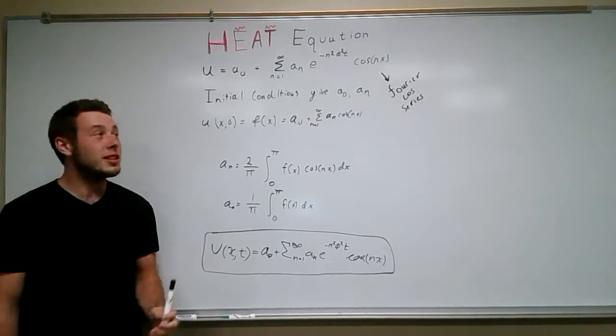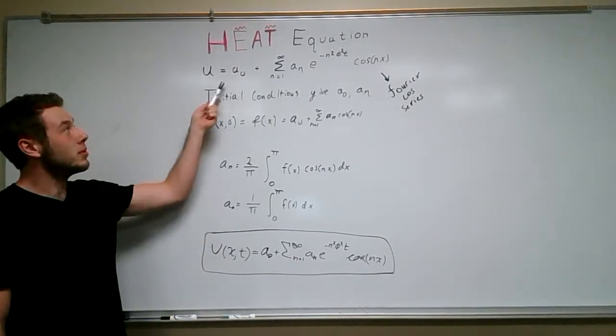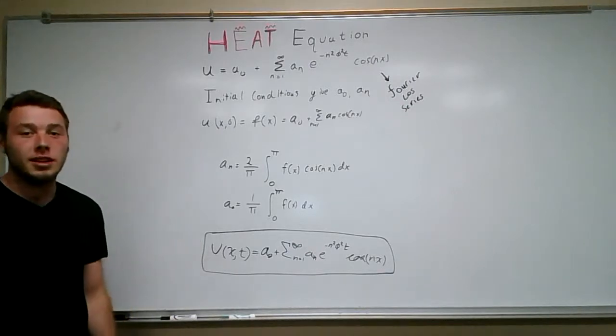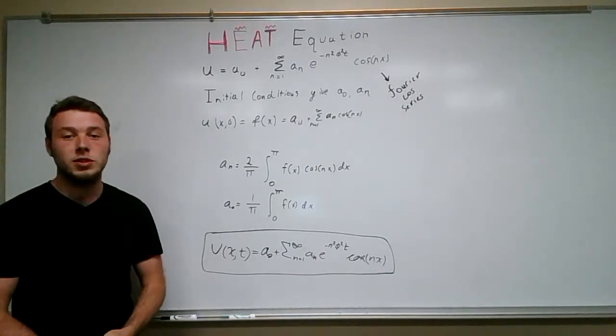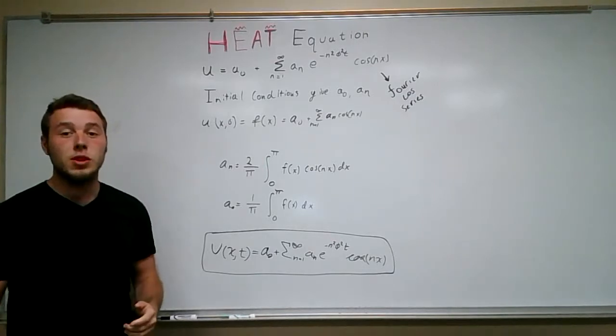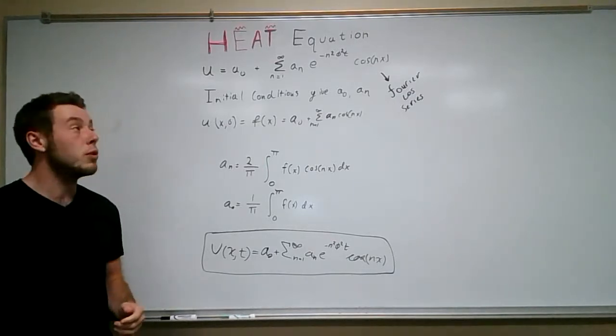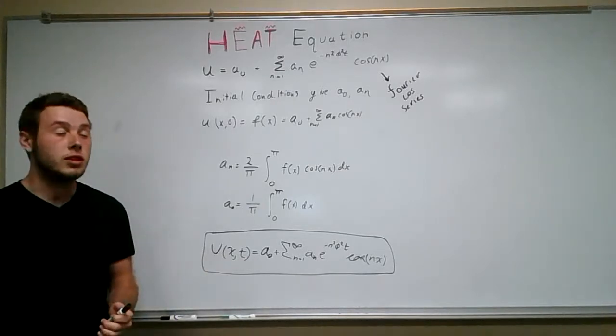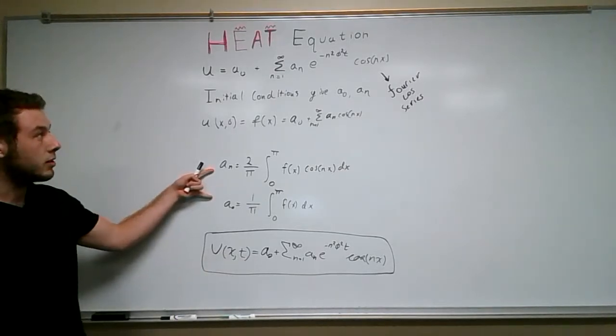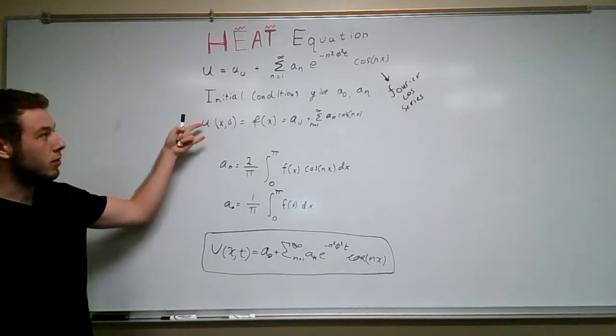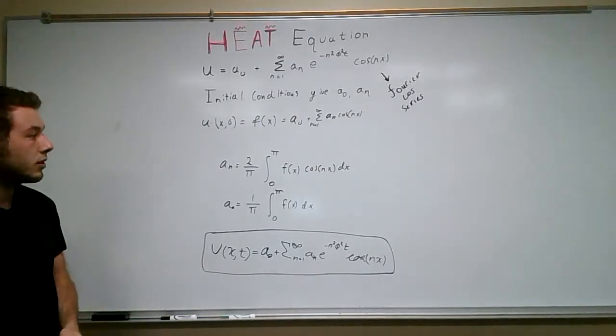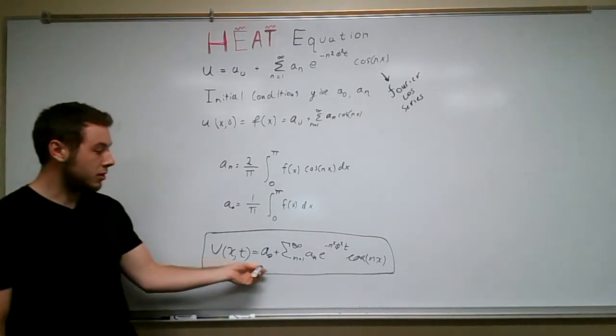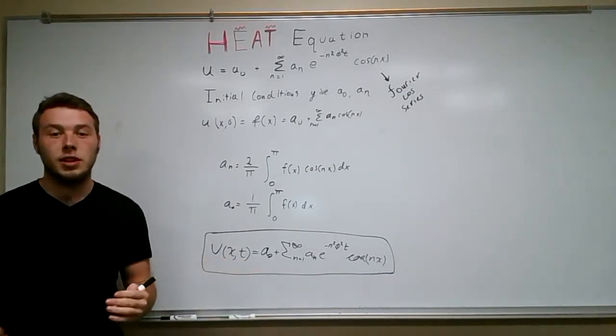All right, so to wrap up this, u equals a0 plus the summation from n equals 1 to infinity of an e to the minus n squared phi squared t cosine nx. You might note that this looks like a Fourier cosine series. Because of that, we can apply the initial conditions and solve for the constants that we have using the properties of a cosine series. These equations are developed separately, but they allow us to solve for u of x and t very nicely.